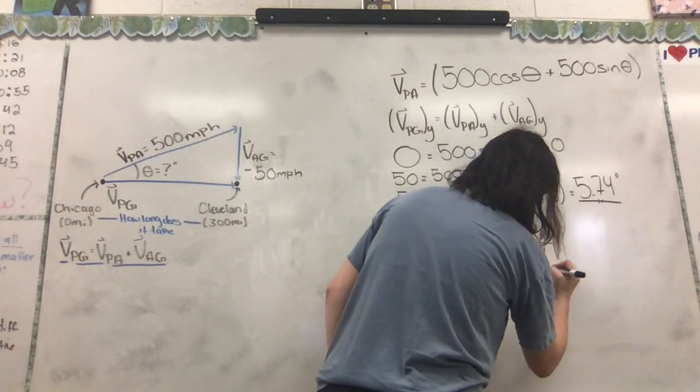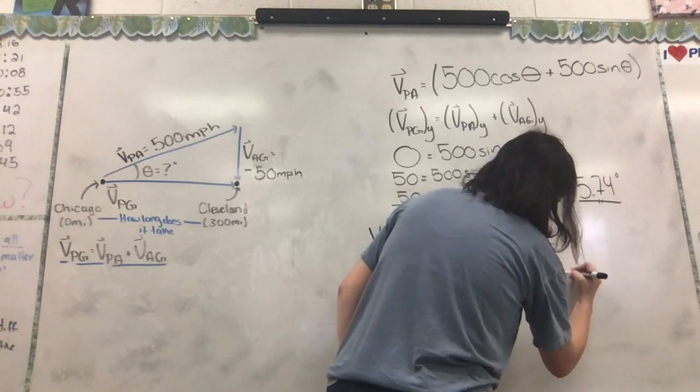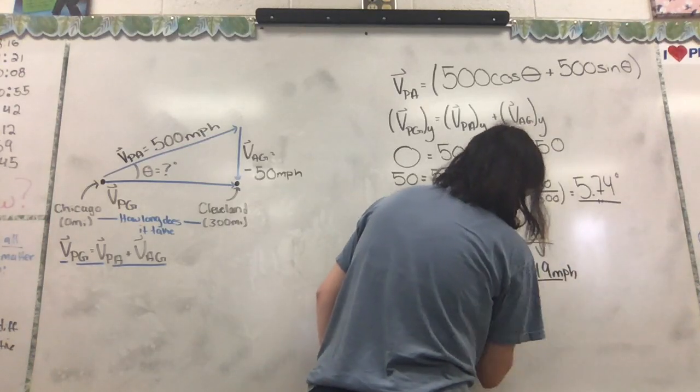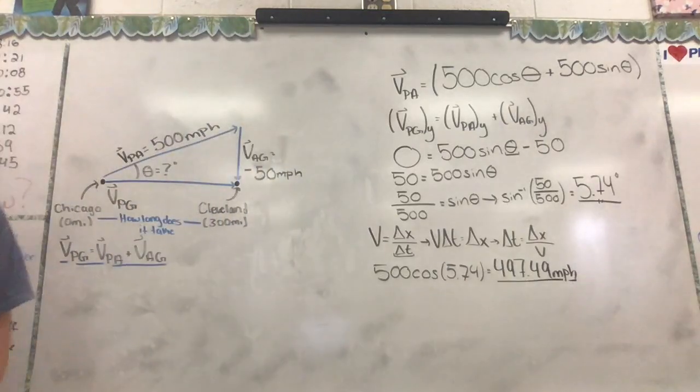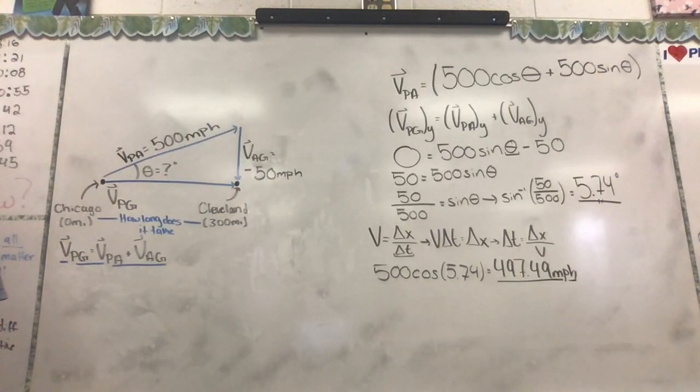497.5 miles per hour. All right. Now that we have that, we can use that 300 and divide it by that velocity, and that will give us our time. See, we're just going to plug it in right here.